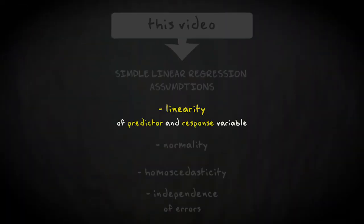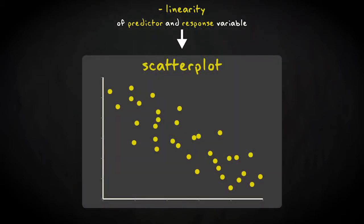The linearity assumption requires that the relation between predictor and response variable is linear in the population. You can use a scatter plot to check for linearity, using your sample as a proxy for the population. Any systematic deviation from a linear, ellipse-shaped cloud of data points should give you reason to reconsider linear regression.